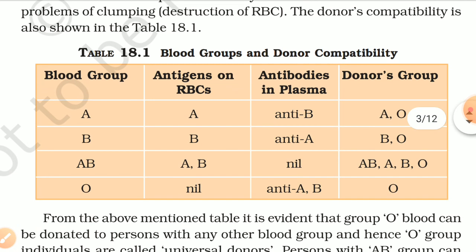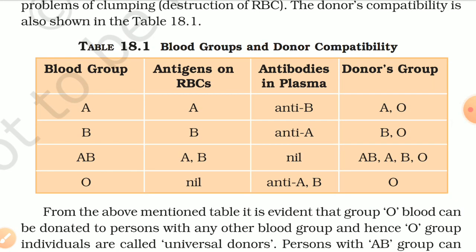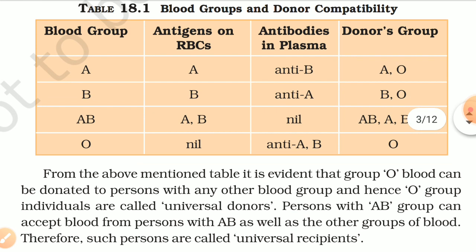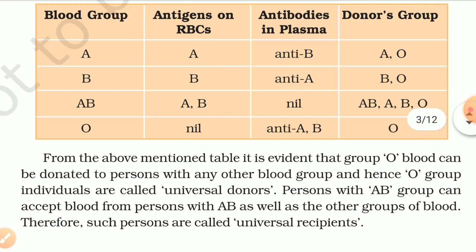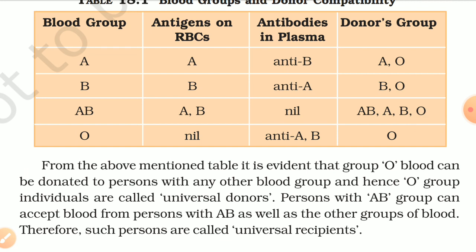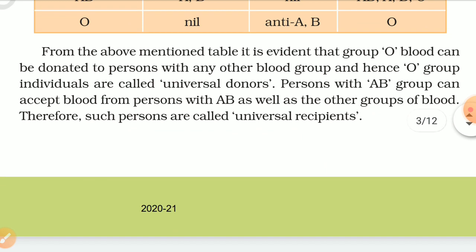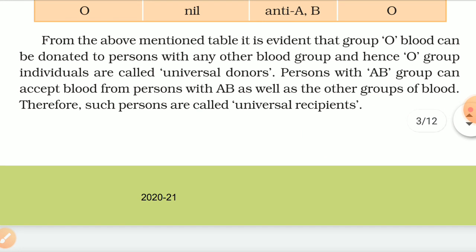Table 18.1 shows blood groups and donor compatibility. Blood group A has antigen A on RBCs, anti-B antibody in plasma, and can receive from groups A and O. Blood group B has antigen B, anti-A antibody, and can receive from B and O. Blood group AB has both A and B antigens. Group O individuals are called universal donors, as their blood can be donated to persons with any blood group. Persons with AB group are called universal recipients as they can accept blood from all groups.